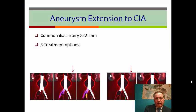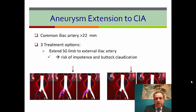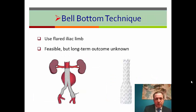What about common iliac aneurysms — usually more than 22 mm? We have three treatment options. First, extend your landing zone to the external iliac artery, but then you have a problem with impotence and buttock claudication. The other option is to use iliac side branch devices — we have two, one from Cook and one from Gore. Or use a chimney technique. Another option is the bell-bottom technique, but the long-term outcome of this technique is unknown.